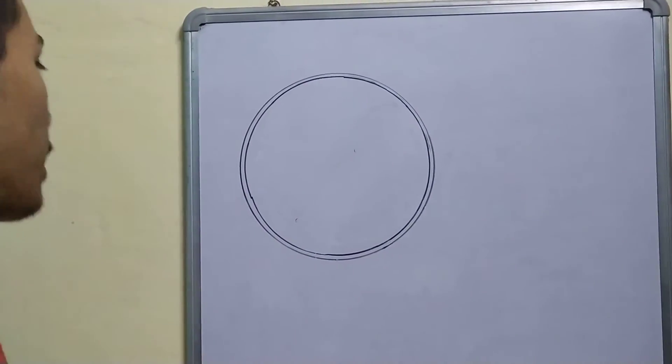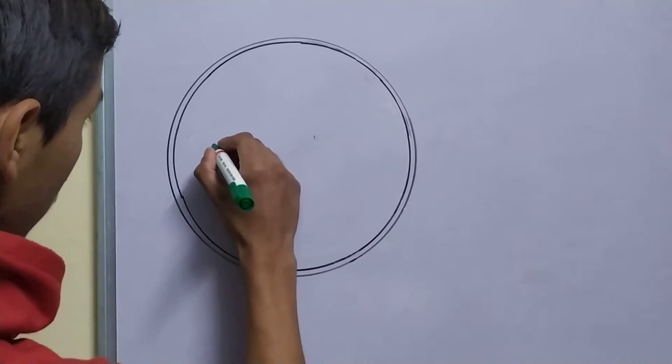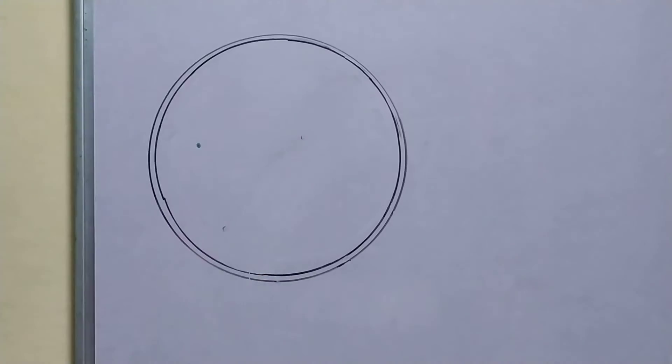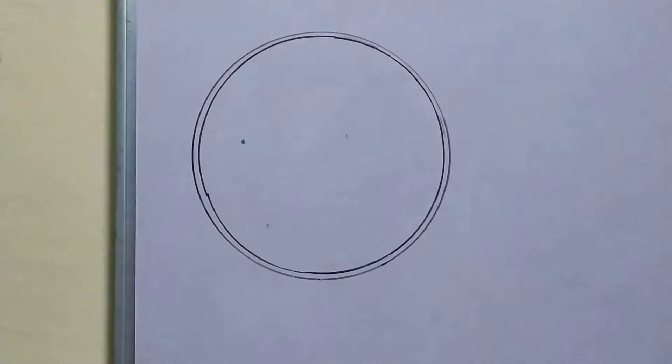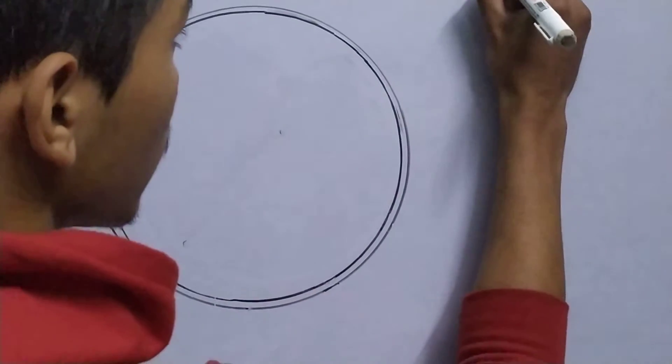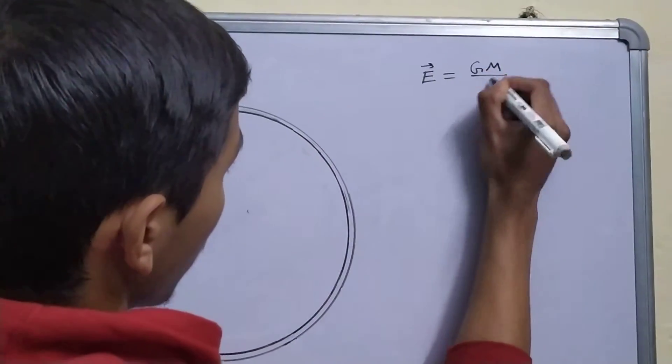We will start by taking a random point, any point like something like this and let us calculate the field. The gravitational field is gm upon r square.